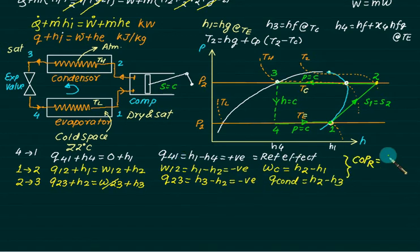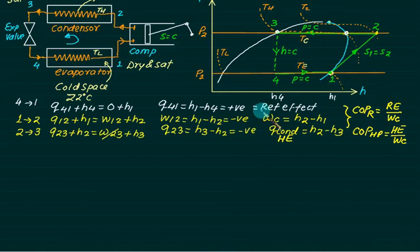COP of refrigerator is taken as Re divided by W of compressor. COP of heat pump is taken as heating effect divided by work of compressor. It is already known that COP of heat pump is COP of refrigerator plus 1.